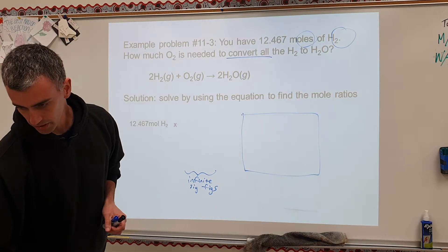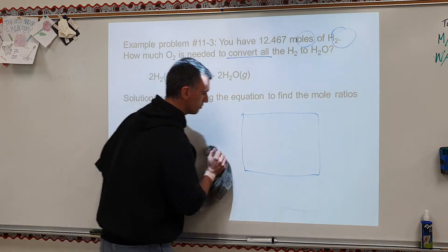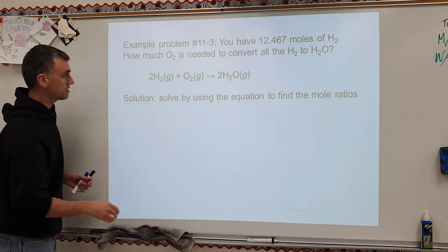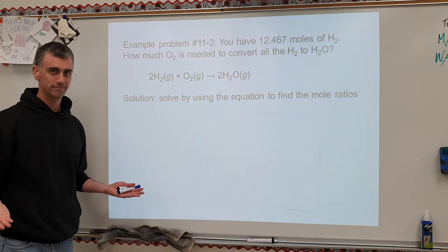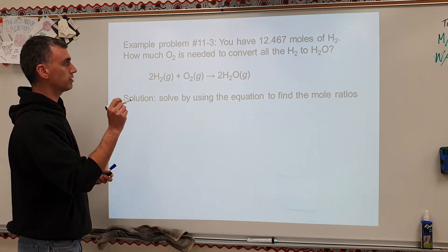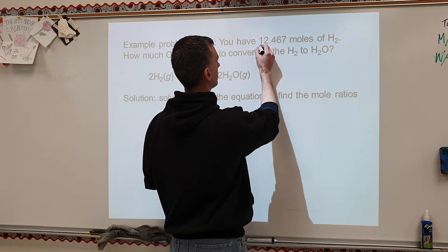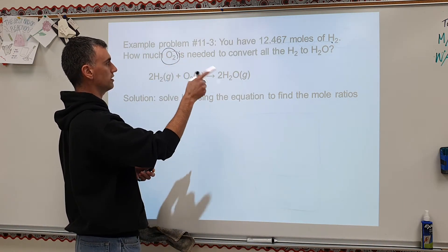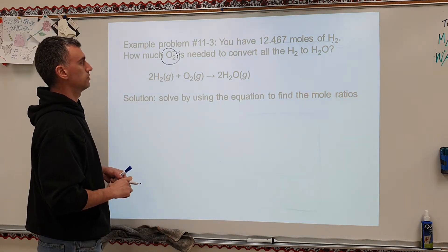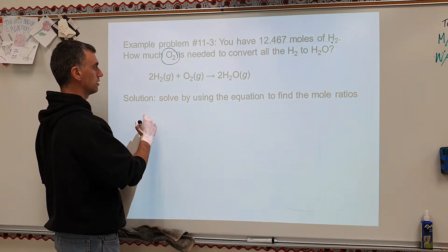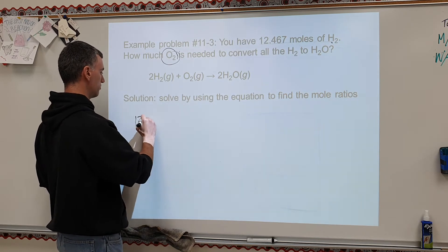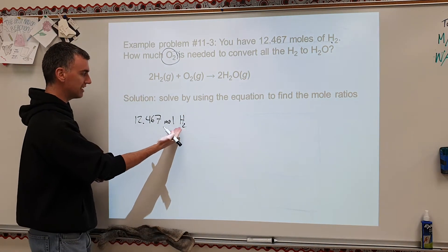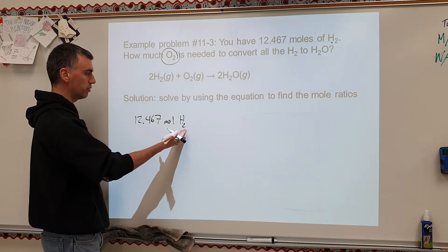There's another example calculation. For those of you watching, pause this video and take a second to solve it, then check if your solution matches. As a reminder: this is the given. How much O2 is needed to convert all the H2 to H2O? Write down the given — 12.467 moles of H2. Notice I've got chemical identity and units — this is critically important on an exam; you must have both in order to get your full points.